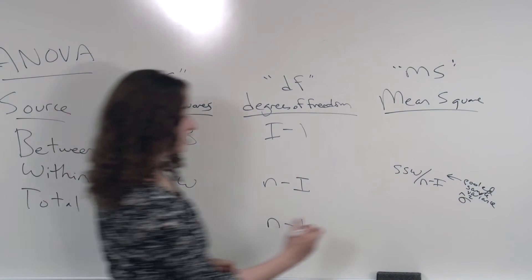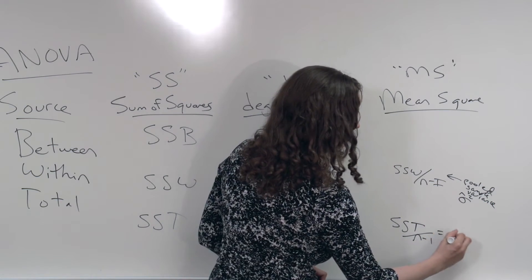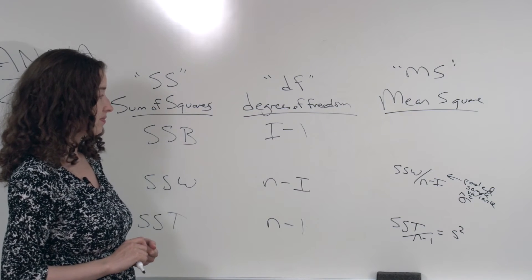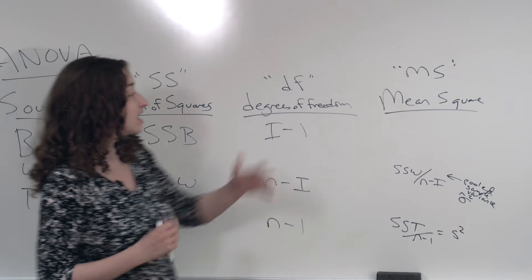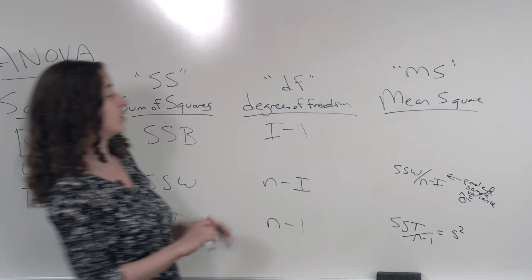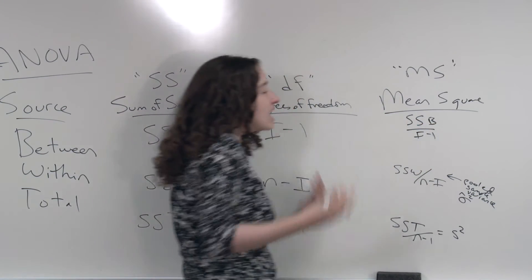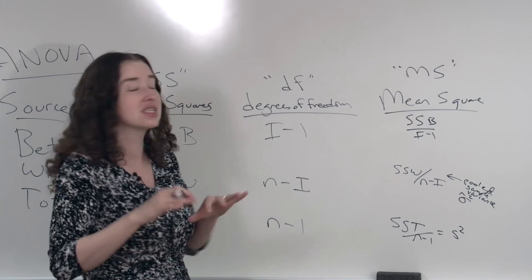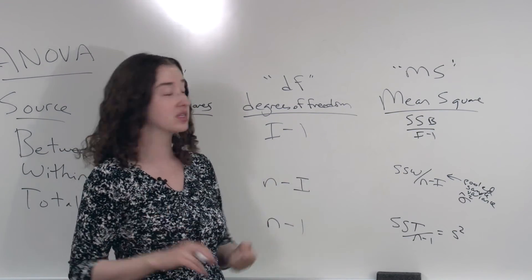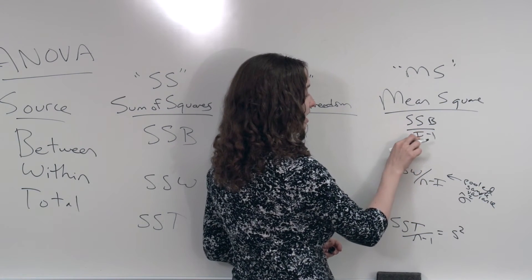If we took SST divided by n minus 1, this is regular old S squared, ignoring the fact that we have any groups. And now what we're going to do to get the quantity that we call the mean square between, we're going to take the sum of square between and divide it by i minus 1. Now again, this is not always exactly related to the variance between groups. It's always related. But this is certainly a related quantity. SSB divided by i minus 1.